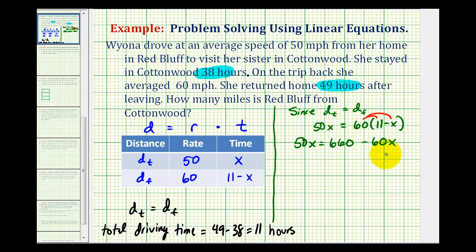Now if we want to solve for x, we have to have x on one side of the equation. So we'll add 60x to both sides. So we have 110x equals 660. Divide both sides by 110. And we have x equals 6.